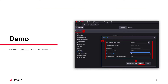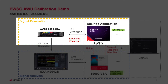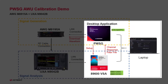Let's see a demo of how to use this PWSGAW closed-loop calibration with VSA. Before we start the demo, we need to set up the calibration system. There are three main parts: the yellow area is for signal generation, the blue area is for signal analysis, and the black area is for the desktop software on the PC.